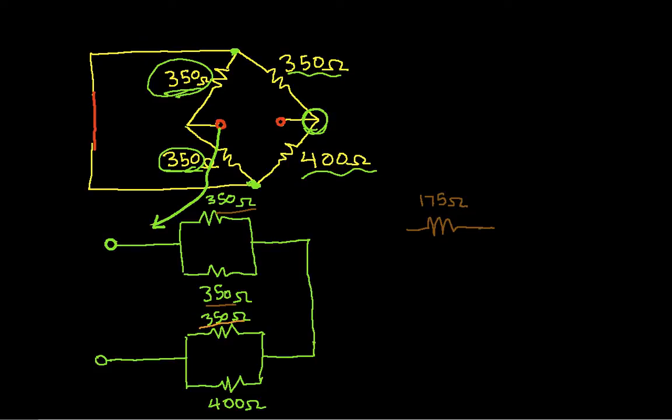Now let's look at the 350-ohm in parallel with the 400. A 350-ohm resistor in parallel with a 400-ohm resistor is 350 times 400 divided by 350 plus 400, which turns out to be 186.67 ohms.